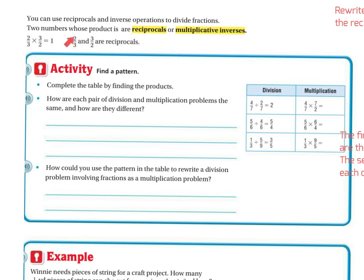They're the opposite because I'm swapping. I'm making the reciprocal. I'm not sure if this was in fifth grade standard. I think we touched on it just a little bit last year, but it wasn't a major standard, but it is definitely an option to use. So activity, find a pattern. So complete the table by finding the products. How are each pair of the division and multiplication problems the same, and how are they different?